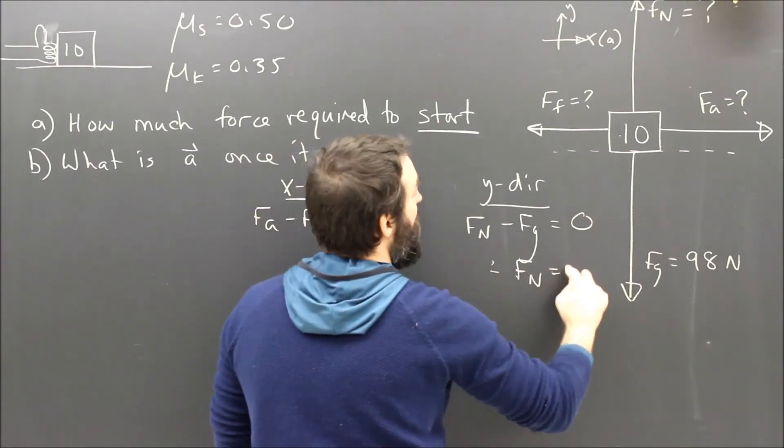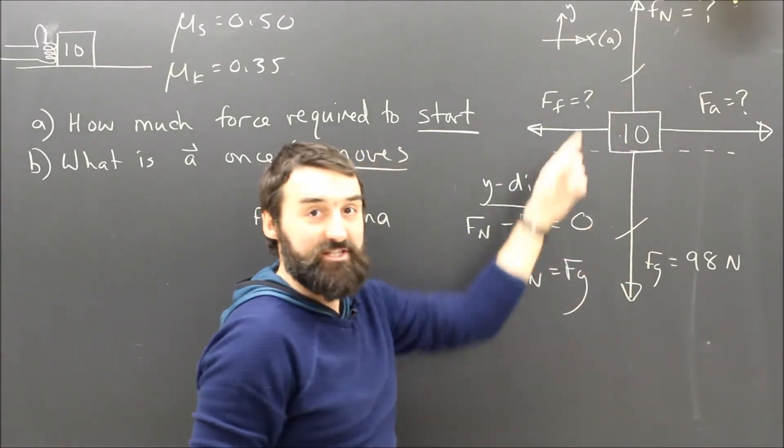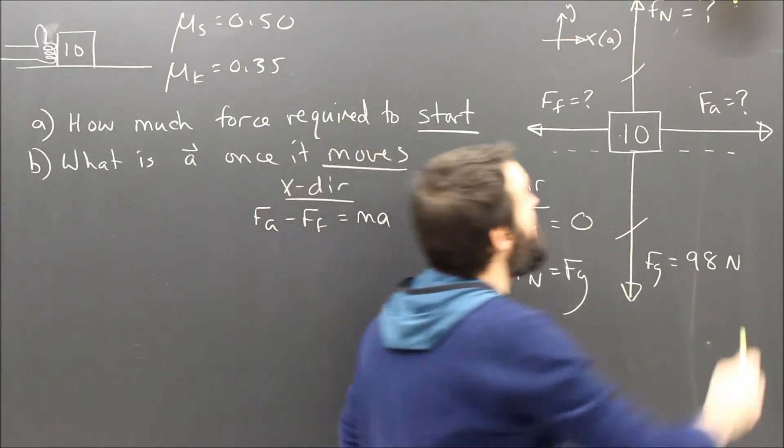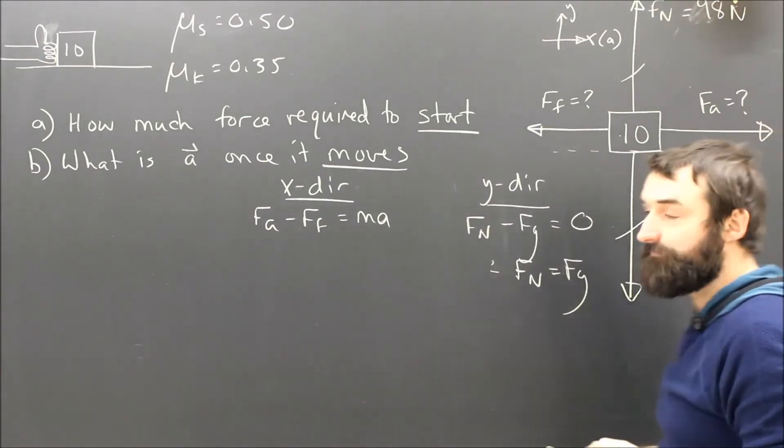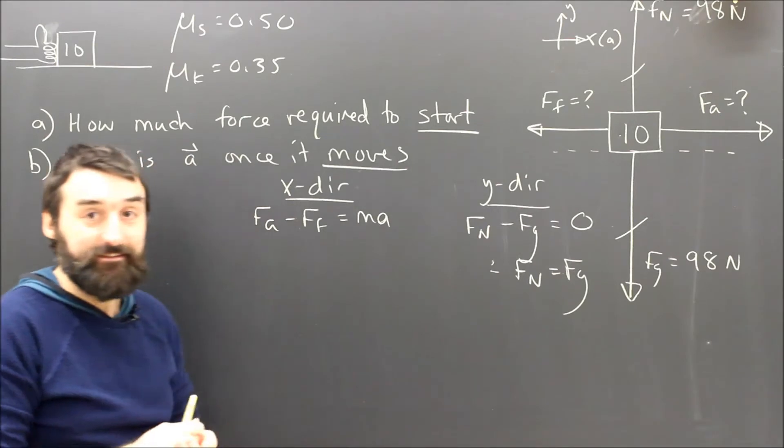So that's how I know in this case I can go slashy slashy, I can put my marks on, and I know that Fn is 98 Newtons. So that's good. I'm not going to assume it. I'm going to calculate it.